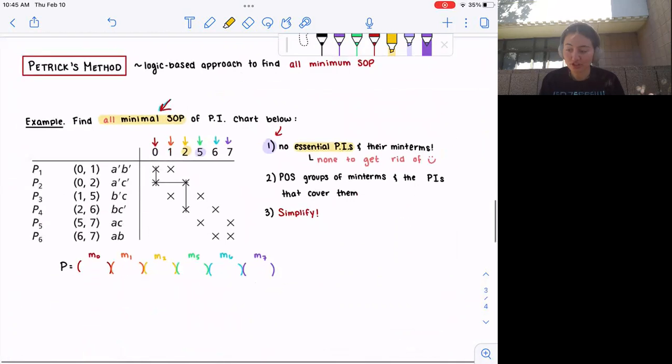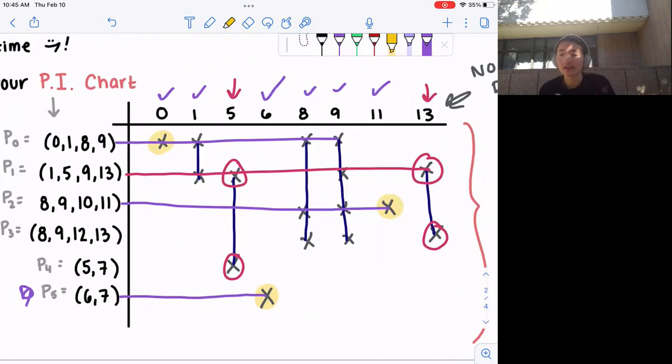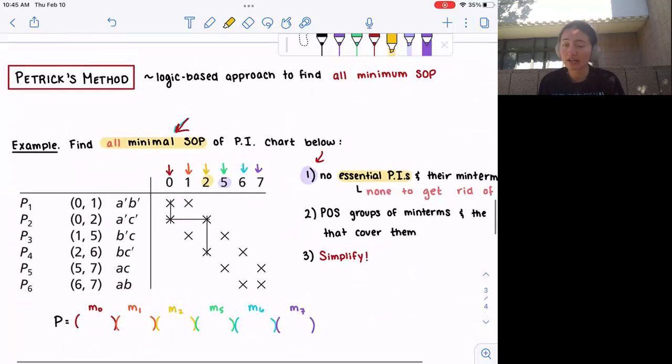That's wrapping up Quine-McCluskey method. We are moving on now to Petrick's method. What happens if Quine-McCluskey, you make the prime implicant chart and it's not super obvious which is the minimum sum of product form, because there might be just a lot of horizontal bars going across and not enough essential prime implicants to narrow down your choices. That's where Petrick's method comes in. The thing about Petrick's method is that it's a systematic way to find all minimum sum of product combinations. Then it's easy to look at all the sum of product that are in most reduced form of a function and then pick out the ones that require the least number of prime implicants.